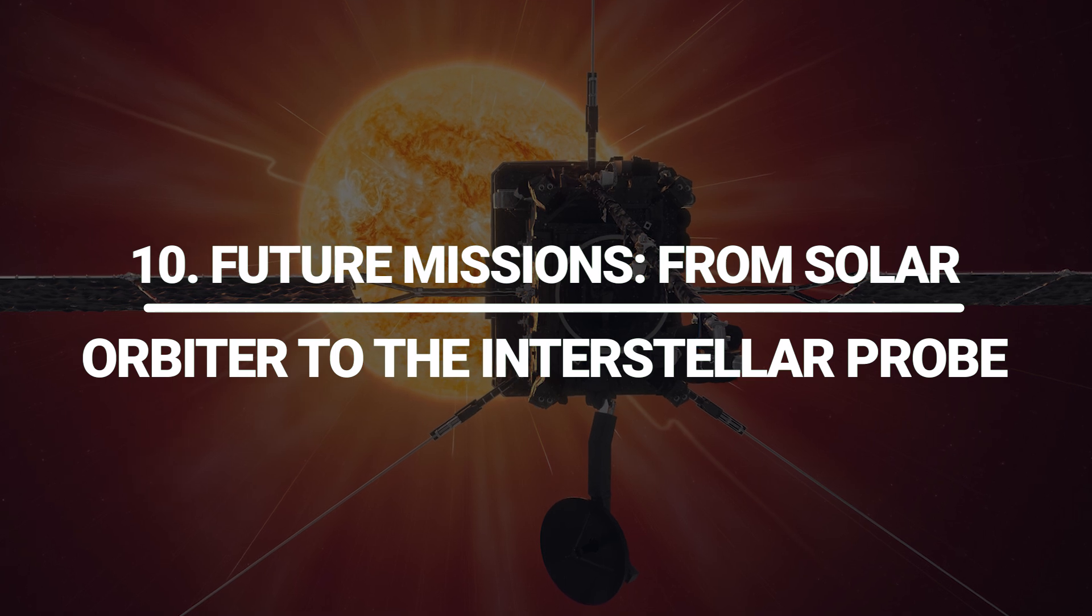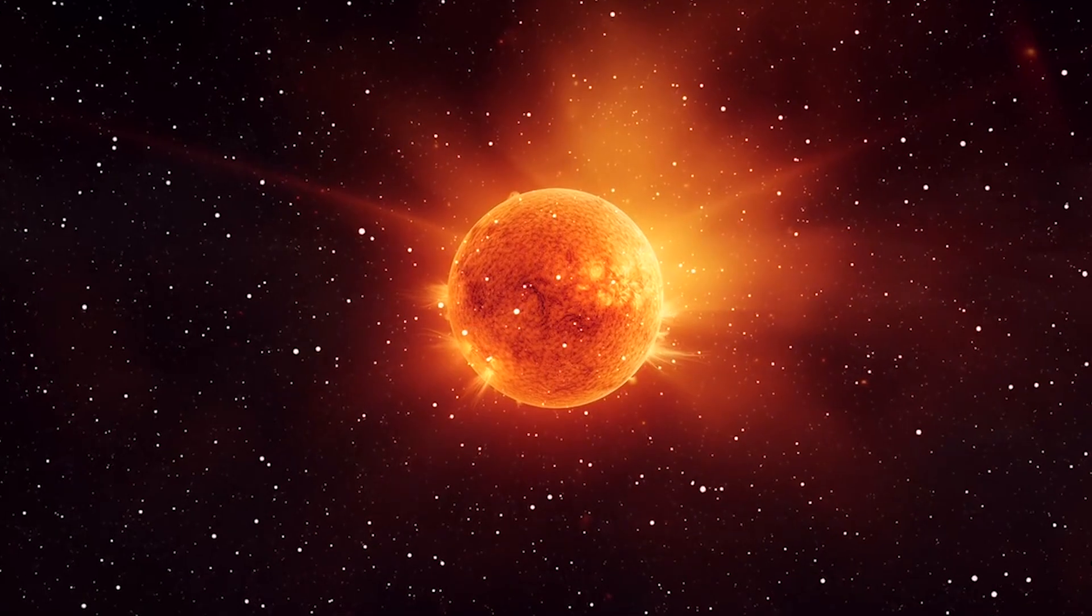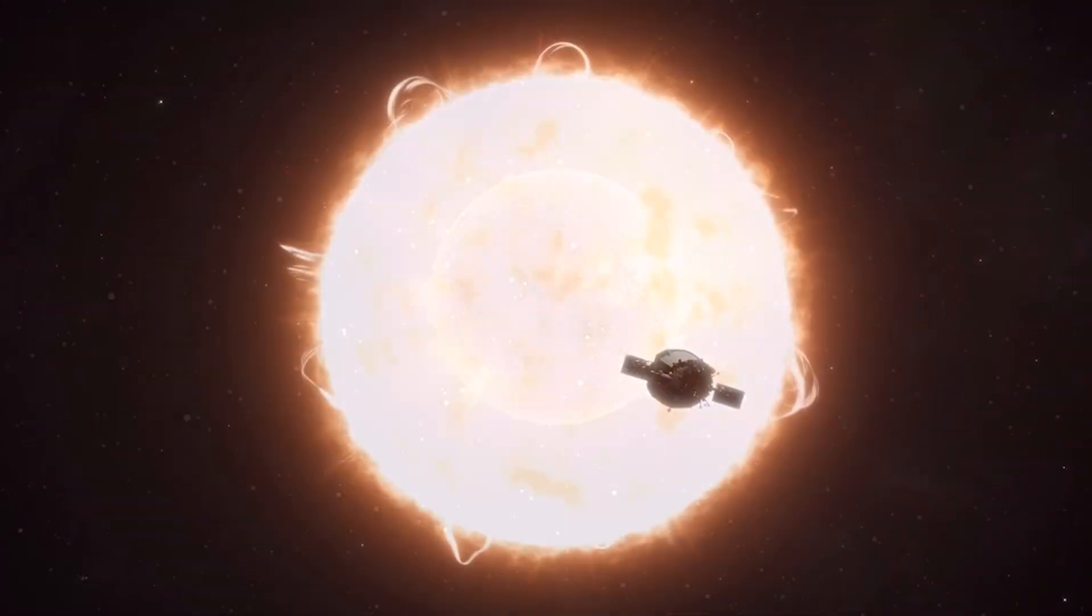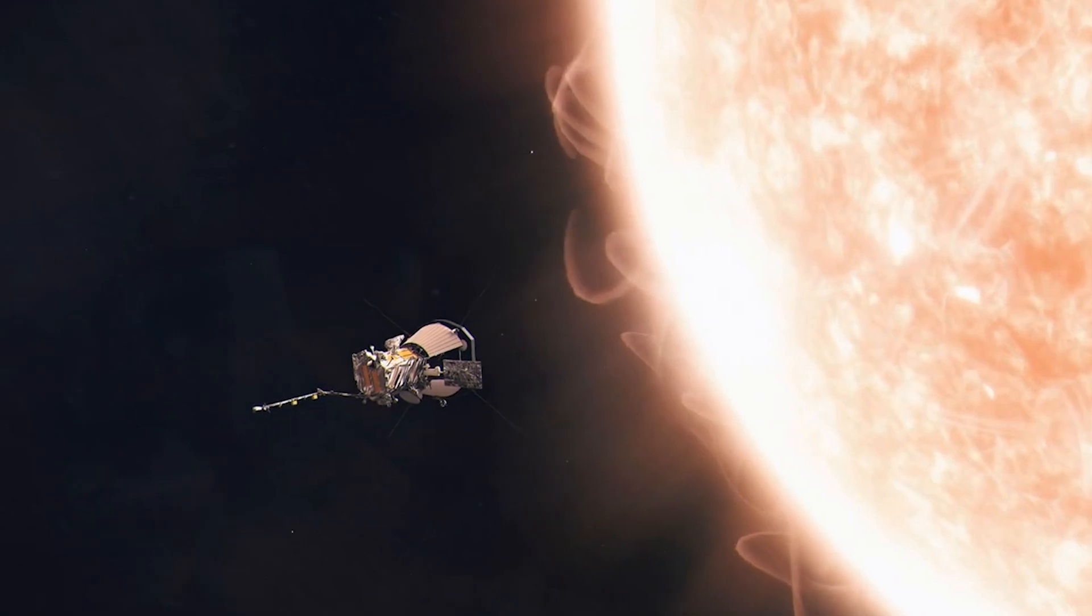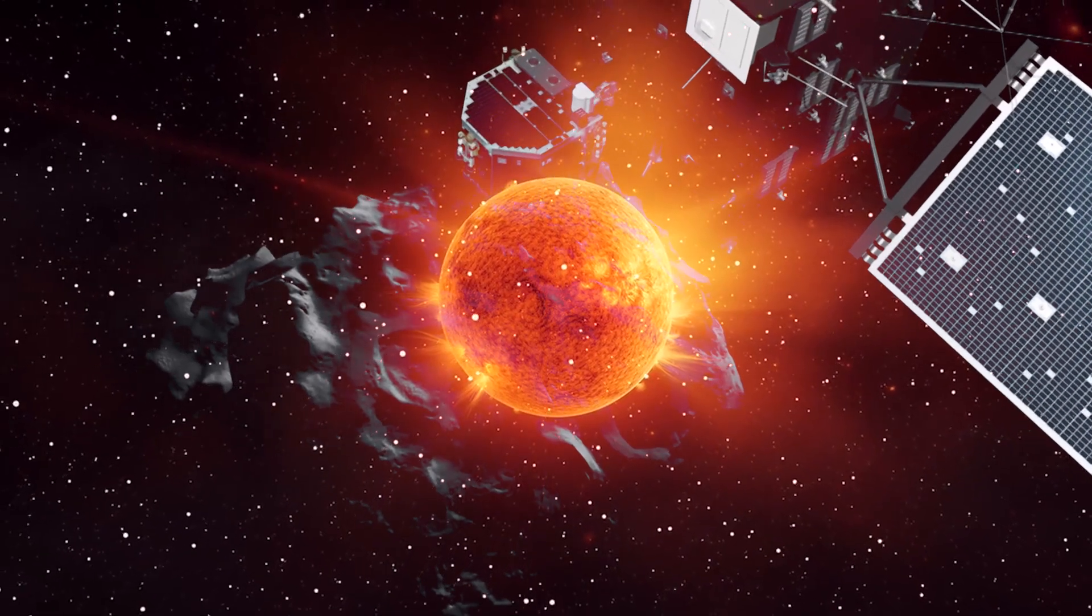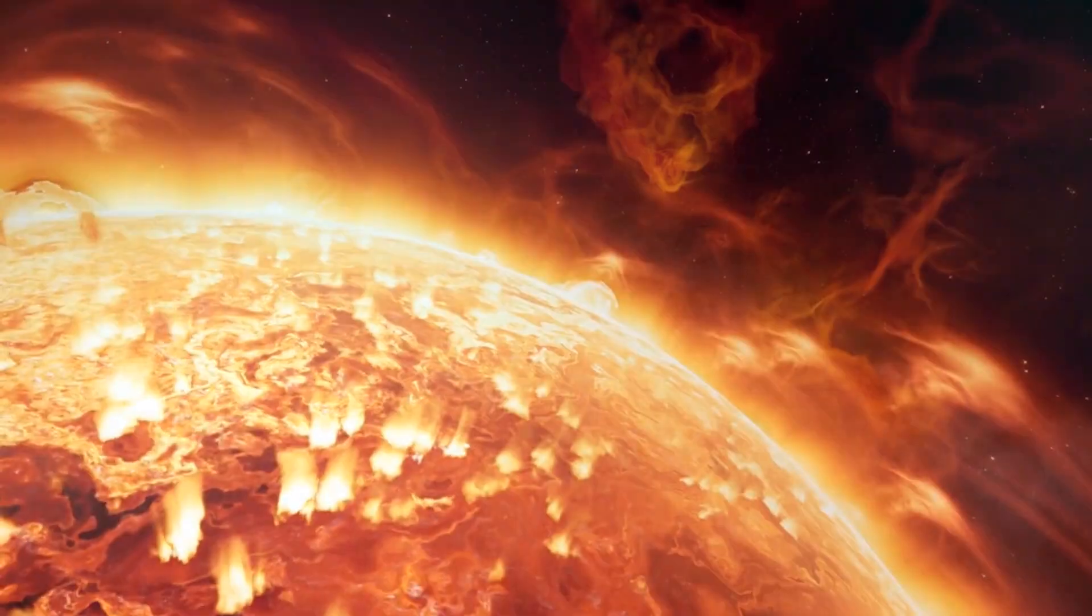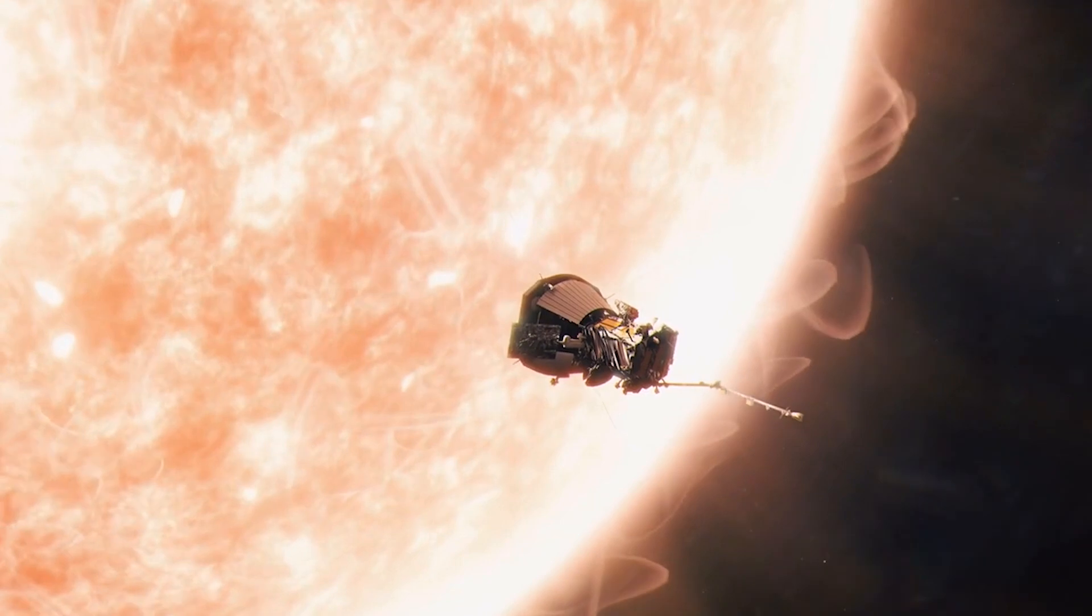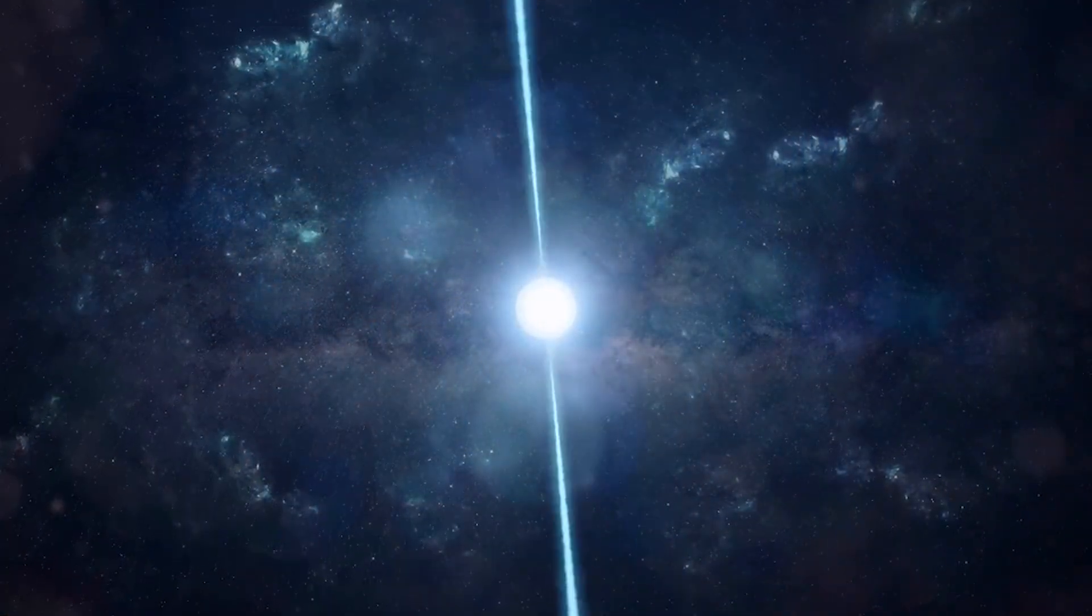Future missions from solar orbiter to the interstellar probe. To truly understand the vertical dimension, we need eyes in the polar sky. ESA's solar orbiter has already tilted its orbit to see the sun's poles, key to modeling the heliotail's southern twist. NASA's proposed interstellar probe would launch in the 2030s, aiming to exit the heliosphere well above the ecliptic, fly through the northern flank of the local bubble, and send back direct samples of interstellar dust.